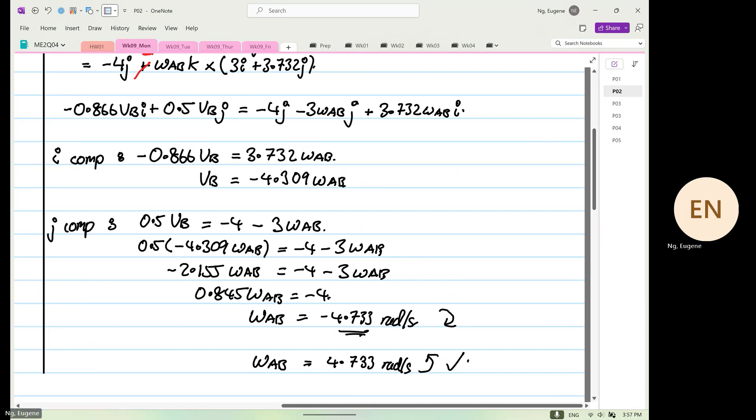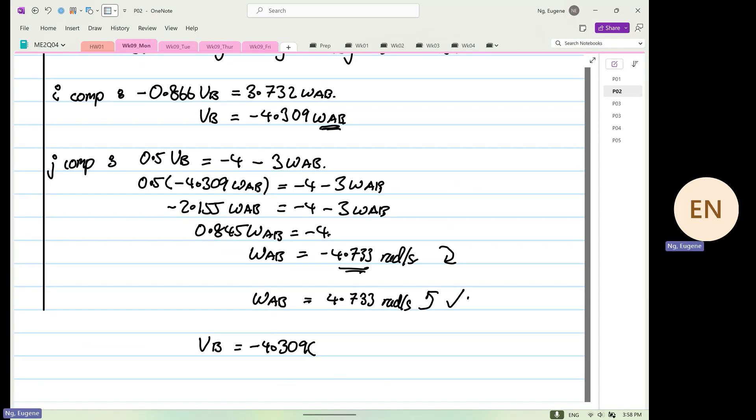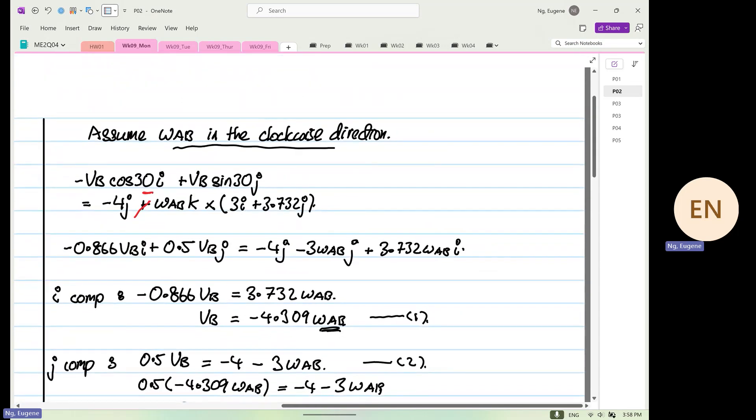Now down here, once this is its final value already, it's not a function, is it? So now we declare that Omega AB, now when it's negative because we assume it to be what direction? Clockwise, yes or no. So now we write down Omega AB is equal to 4.733 radians per second, the correct direction is what? Anti-clockwise. Clear? Crystal clear, yes or no.